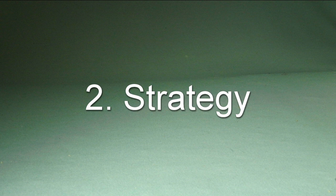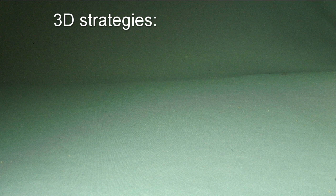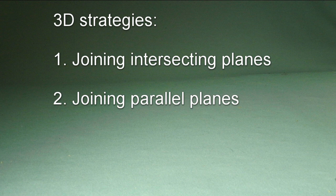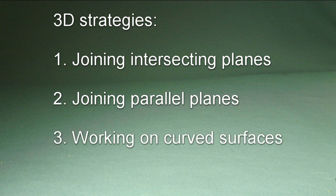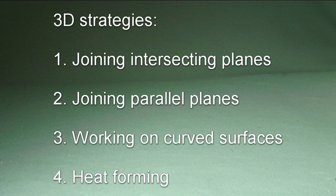This video is going to be about some of the different possible strategies you can use to get from 2D to 3D. Most of them fall into four general categories: joining intersecting planes, joining parallel planes, working on curved surfaces, and working flat and heat forming later. Each of these really need a separate video, but let's look at what they can do for you.